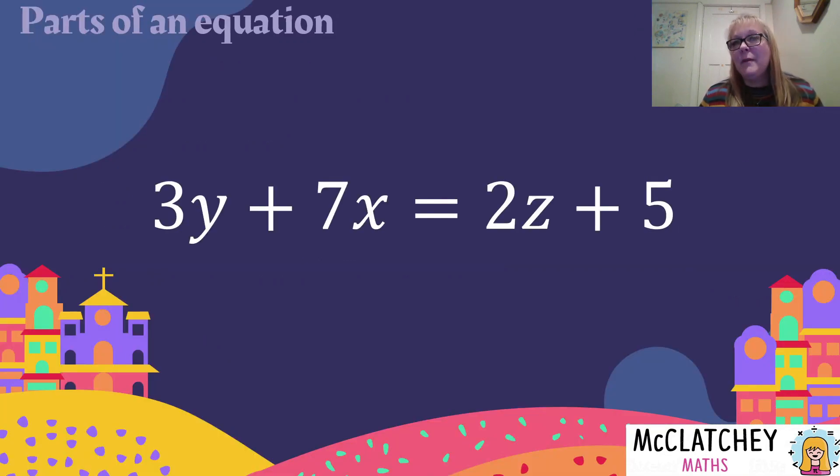So here are an example of what an equation could look like. We've got 3y plus 7x equals 2z plus 5s. We've got three different types of variables here, a y, an x, and a z. We've got four terms all together.